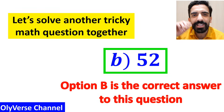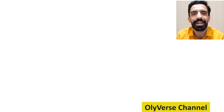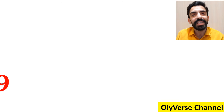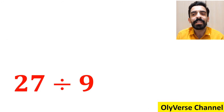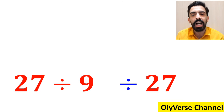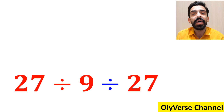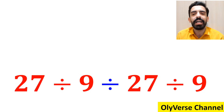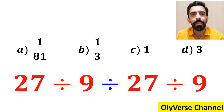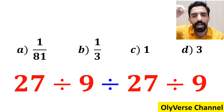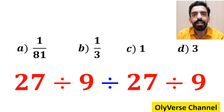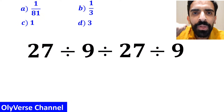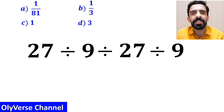Now let's solve another tricky math question together. What is the value of the expression 27 divided by 9, again divided by 27 divided by 9? Which option do you think is the correct answer? Let's carefully go through the steps and solve it together.